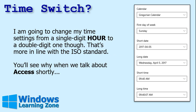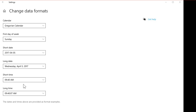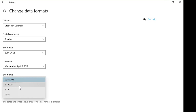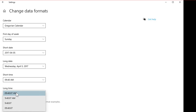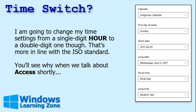I'm going to leave the time format pretty much as it is, but I am going to switch from the single-digit hour to the double-digit hour — that's more in line with the ISO standard. So I'm going to change my short time and long time settings. I'll explain exactly why this matters when I talk about how it affects Microsoft Access in a few minutes, so hang in there.